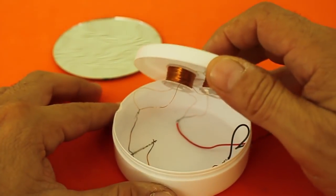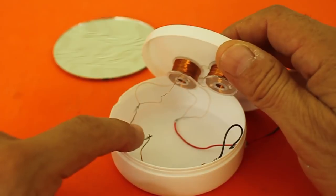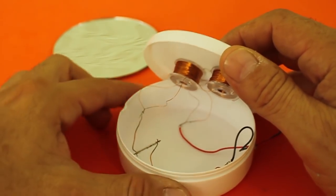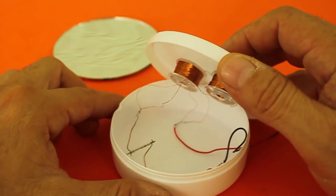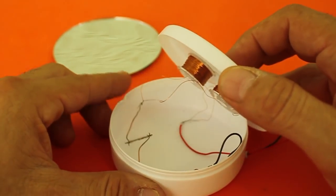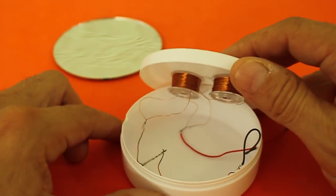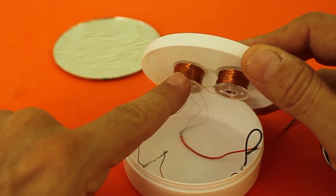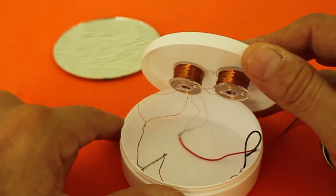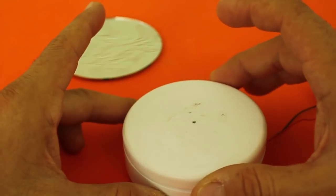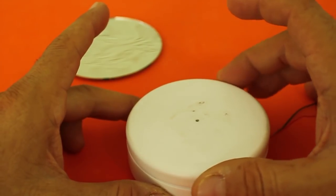The position of the reed switch is critical. It must be close enough to the center to feel the magnetic field of the magnets but not too close, because otherwise it will stay on all the time. Also, it must be closer to one of the coils than the other, but this is easily adjusted by rotating the lid of the container.